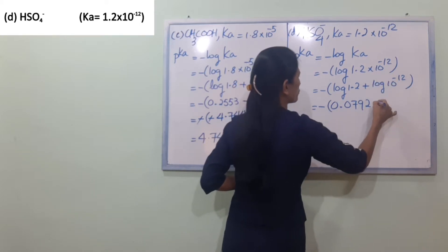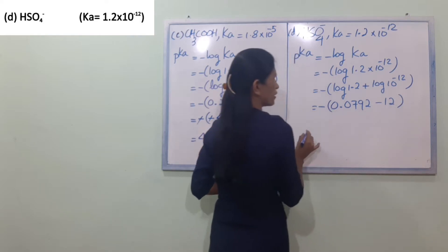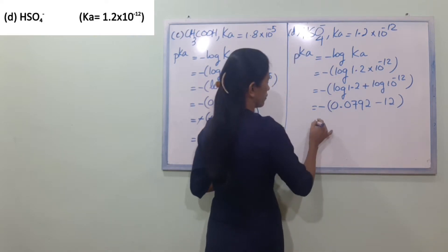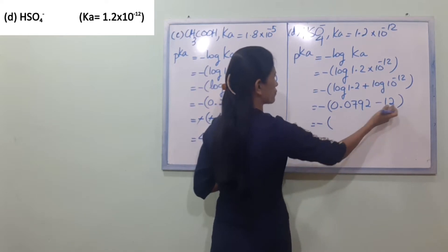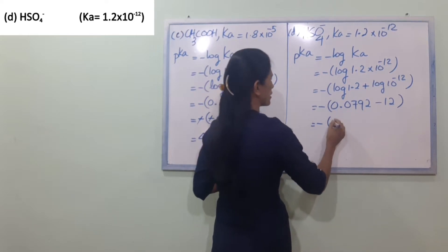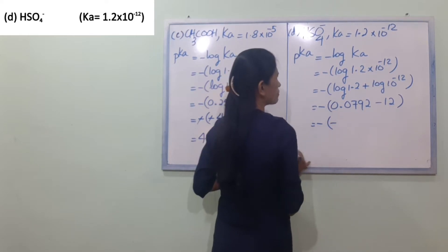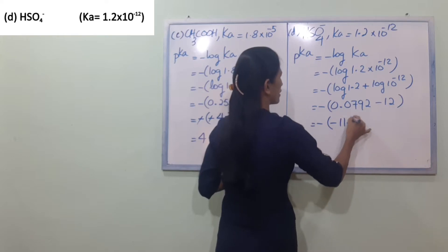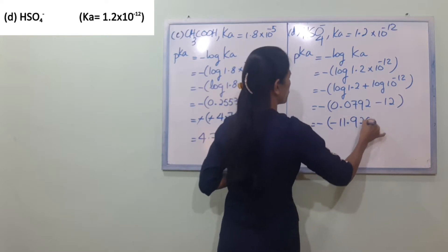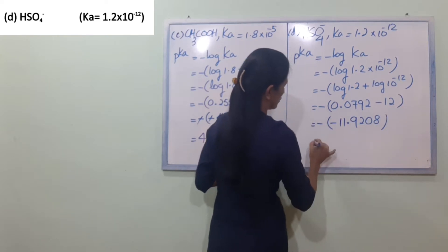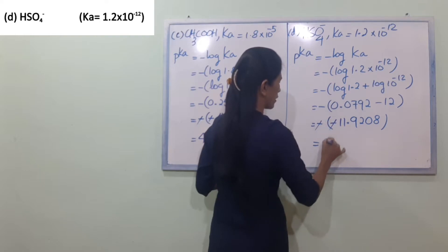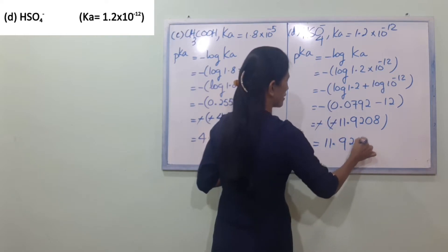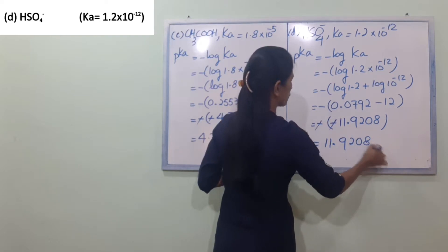Minus 12. So we get minus log 1.2 plus log 10 power minus 12, which equals minus 11.9208.